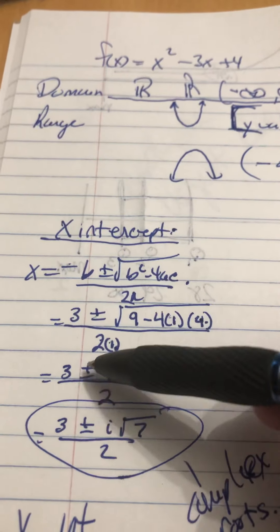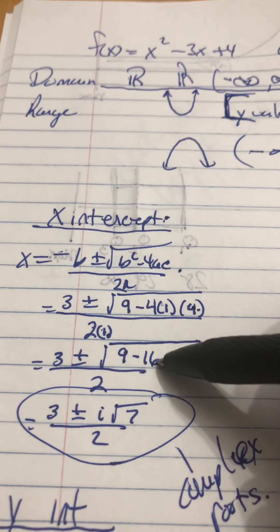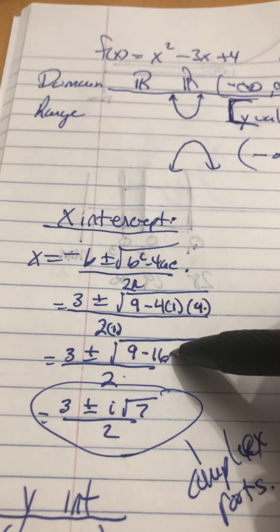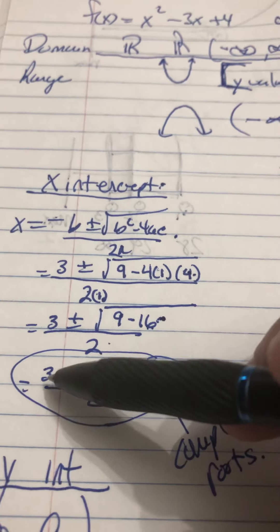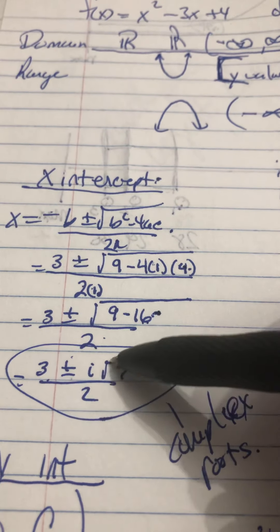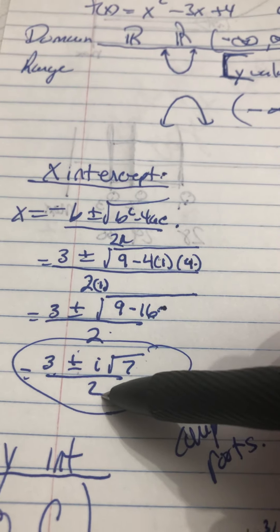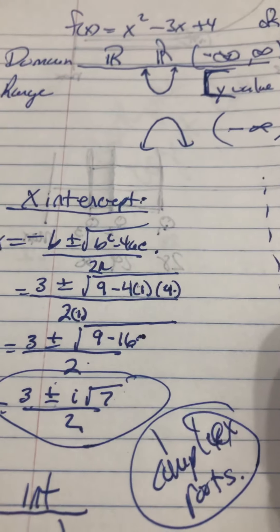So, this becomes 3 plus or minus the square root of 9 minus 16 over 2. Now, this is our discriminant. It's going to be negative, which means we get complex roots. So, we end up with 3 plus or minus i times the square root of 7 over 2. Again, complex roots.